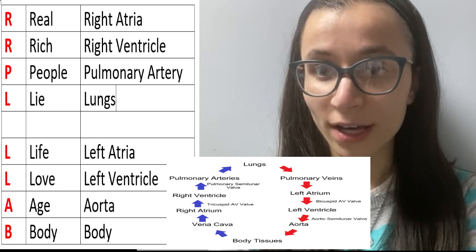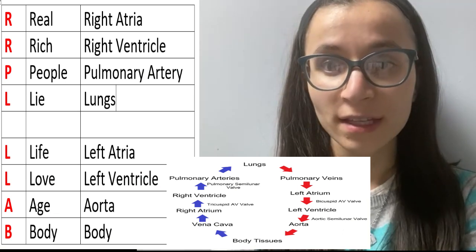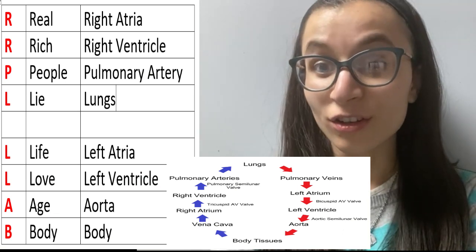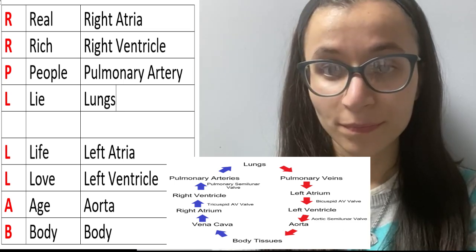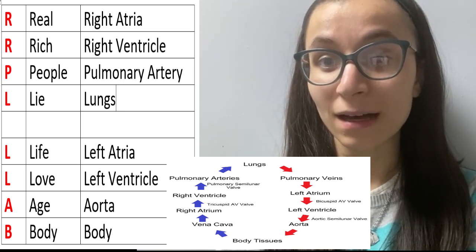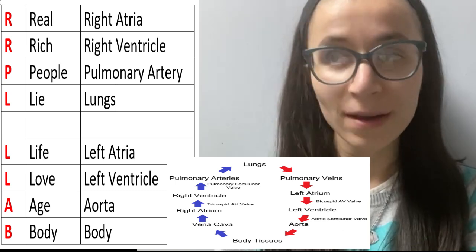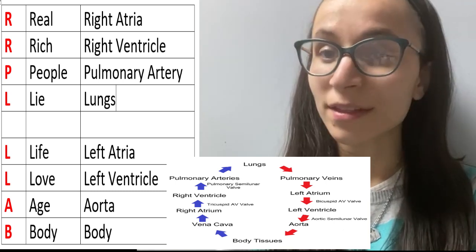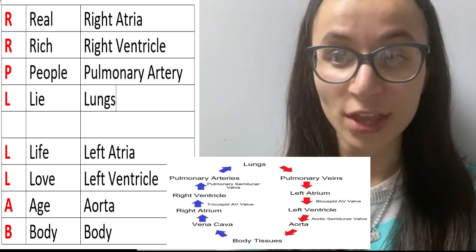So the mnemonic is as follows: Real rich people lie. What do they lie about? They lie about their life, their love, their age, and their body. So that's R-R-P-L. Real rich people lie. What do they lie about? L-L-A-B: life, love, age, and body.